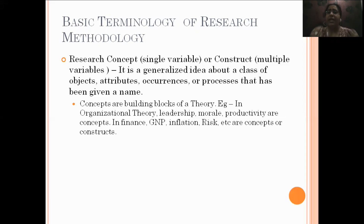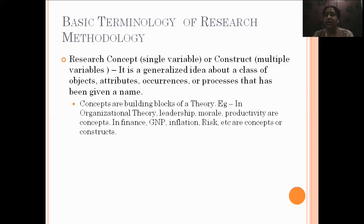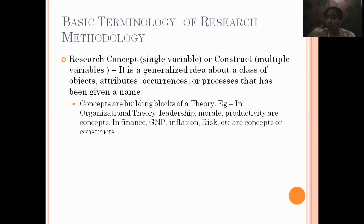A basic difference between concept and construct is that when we are doing research, we normally study variables rather than concepts. A variable is something whose value is changing. When we are studying only one variable to understand a concept, it is called a concept. When we are dealing with a concept where we have to study more than one variable, and cumulatively we are understanding that concept, the term construct is used. In simple terms: one variable — concept; more than one variable to understand something — construct.